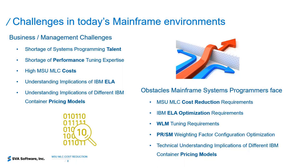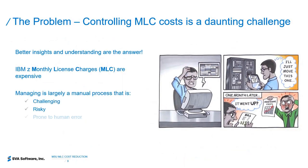The problem with controlling MLC cost for many customers is that it's challenging, it's risky, and there are a lot of human errors in the calculations — it's an expensive process while people learn it. Most customers struggle; they attempt to reduce monthly license charges but have trouble figuring out how to approach it. They typically have to pull in a lot of disparate reporting data from different sources and try to make sense out of it.